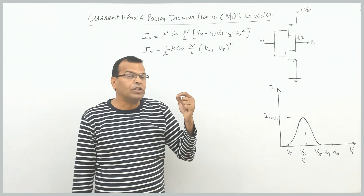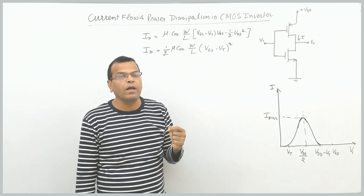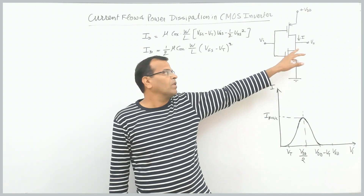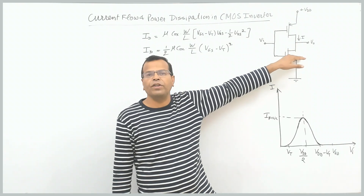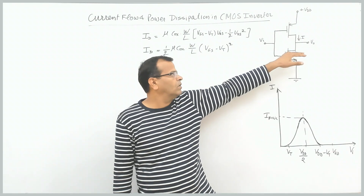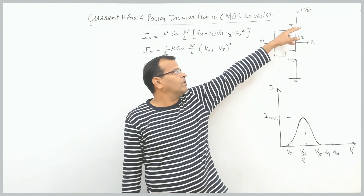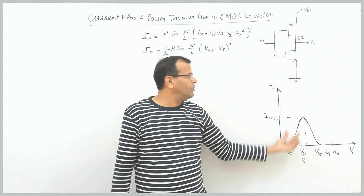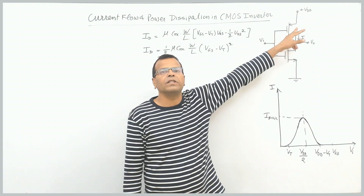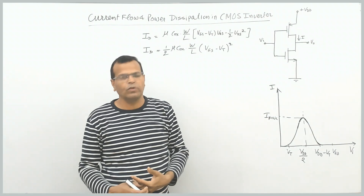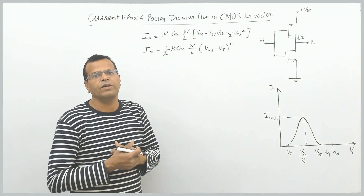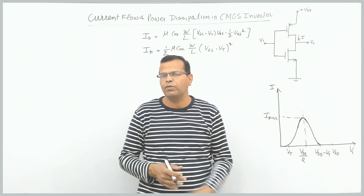When we change the input voltage from 0 to VDD, NMOS operates initially in cut-off region, then in saturation region, then in ohmic region. In contrast, PMOS will first be working in ohmic region, then in saturation, then in cut-off. You can refer to the voltage transfer characteristics where we discuss the different regions of operation depending on the range of input voltage.